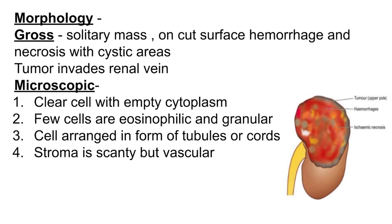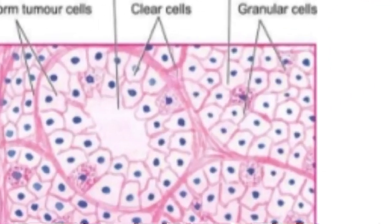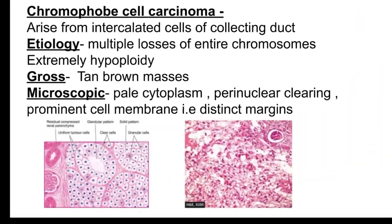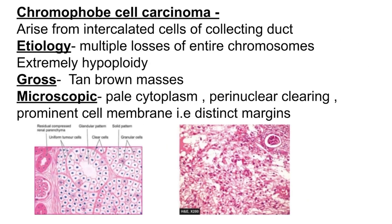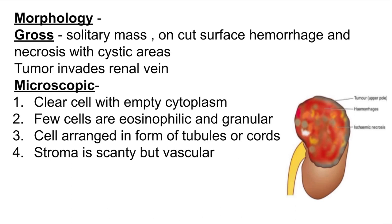Grossly, there will be a solitary mass present, and on the cut surface you can see hemorrhage and necrosis with cystic areas. The tumor may invade the renal vein. Microscopically, as the name suggests, you can see clear cells — meaning the cytoplasm is empty and only the nucleus is visible — along with few eosinophilic and granular cells. These are arranged in the form of tubules or cords, and the stroma is scanty but vascular.